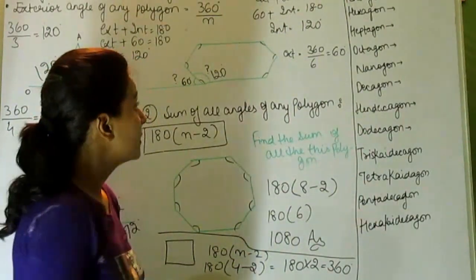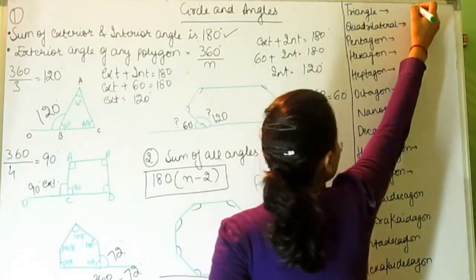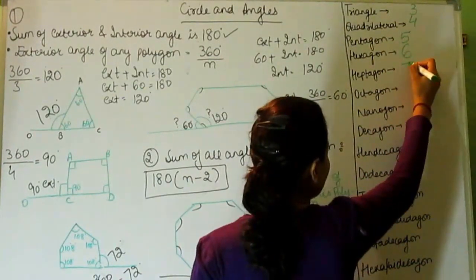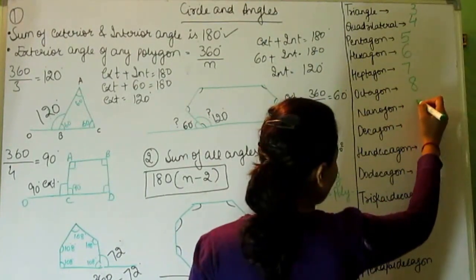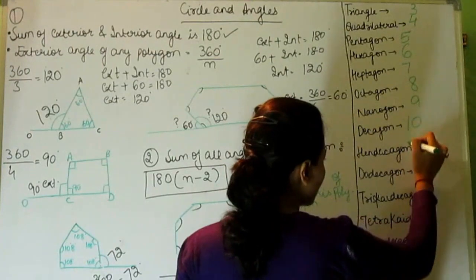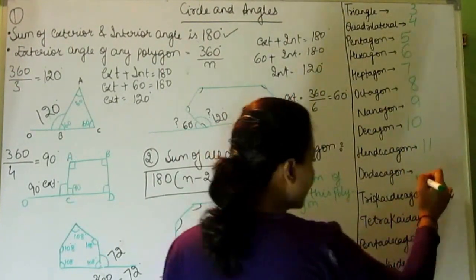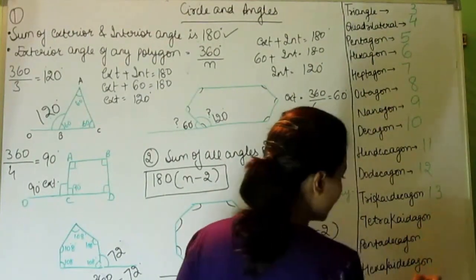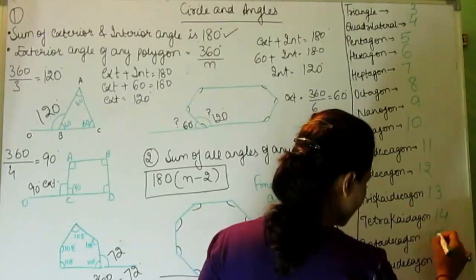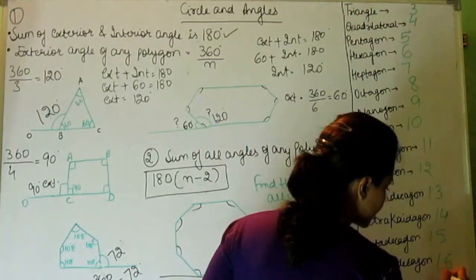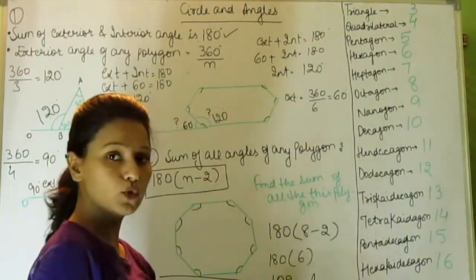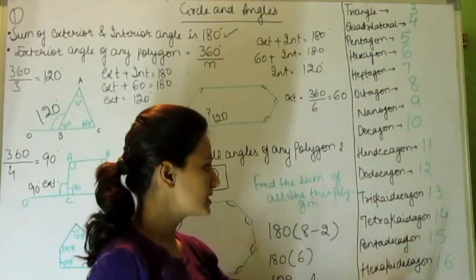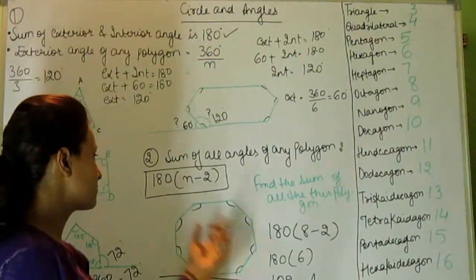Here is a table of polygon names: triangle has 3 sides, quadrilateral has 4, pentagon has 5, hexagon has 6, heptagon has 7, octagon has 8, nonagon has 9, decagon has 10, hendecagon has 11, dodecagon has 12, tridecagon has 13, tetradecagon has 14, pentadecagon has 15, and hexadecagon has 16 sides. Learn this table and apply it in the formula.